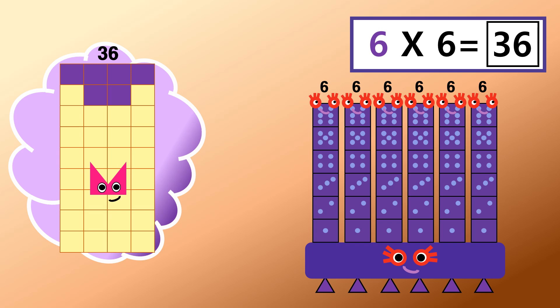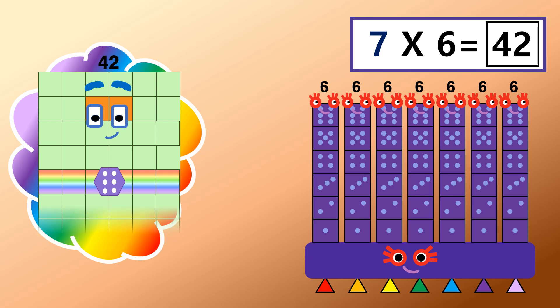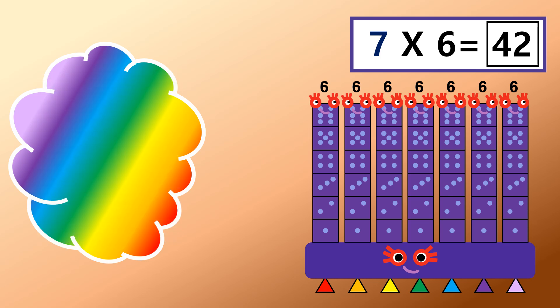Thirty-six is a box of tricks. Seven sixes are forty-two. Forty-two, where are you? Forty-two teleported out of view.